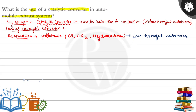It converts harmful substances like carbon monoxide to carbon dioxide, and hydrocarbons into water vapors, with the help of chemical reactions. So the first use inside automobiles is that it converts pollutants like carbon monoxide and nitrogen oxides into less harmful substances.